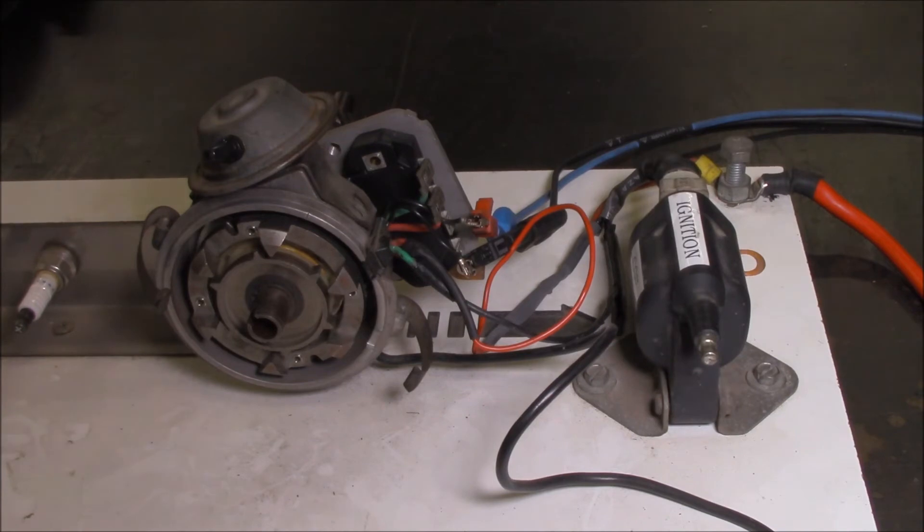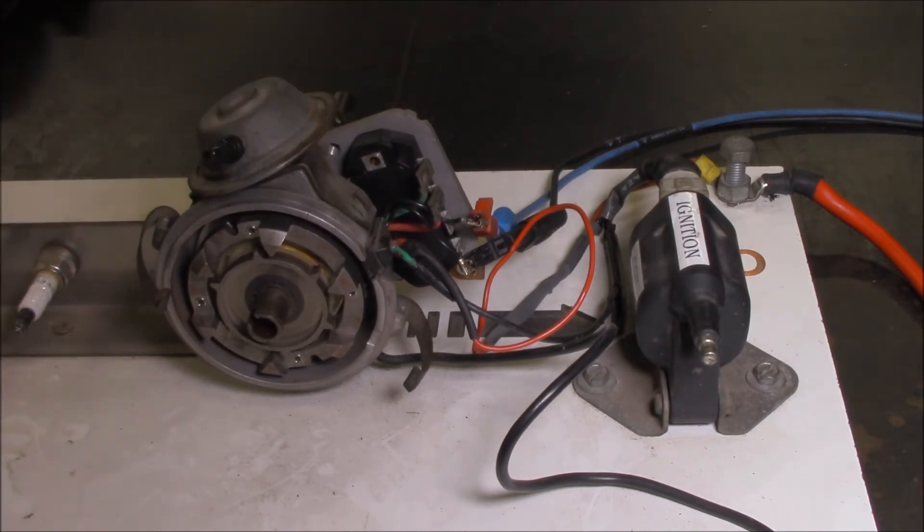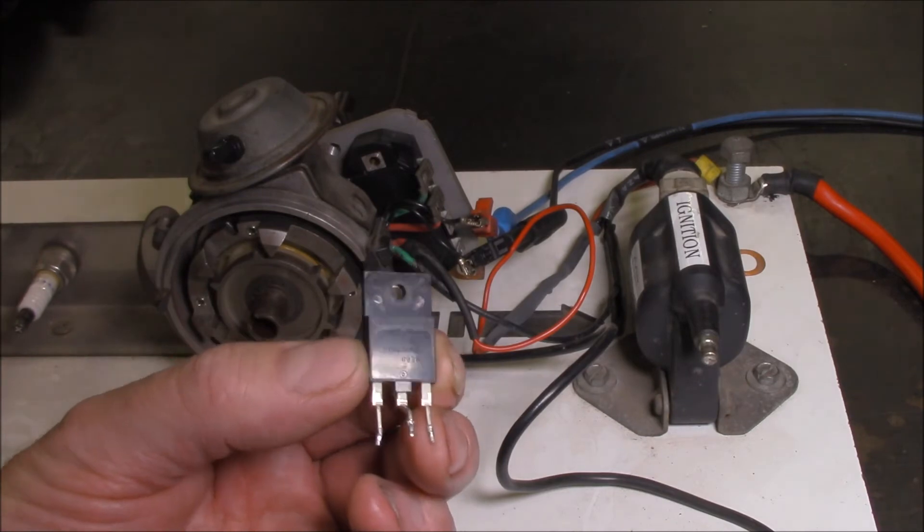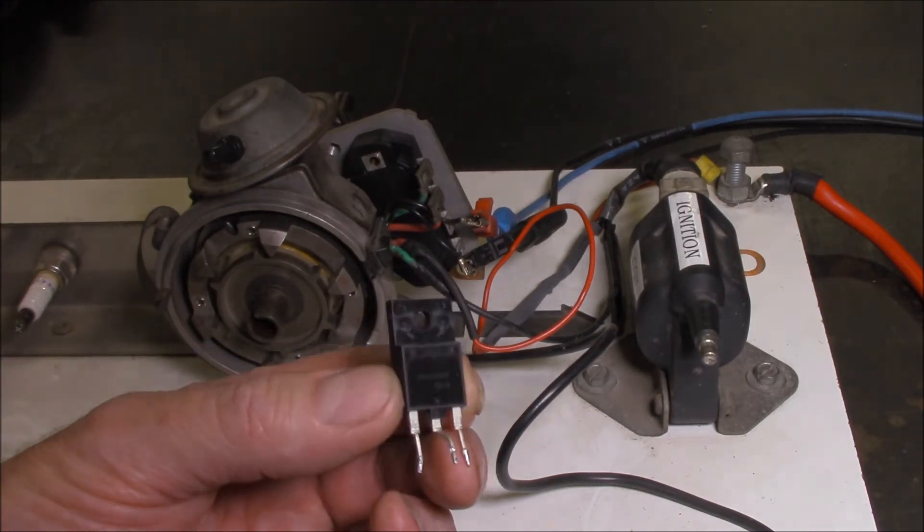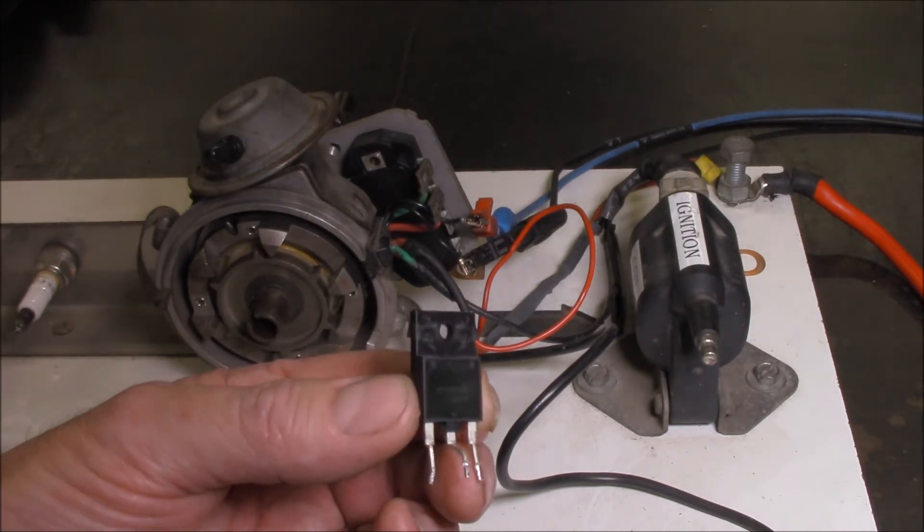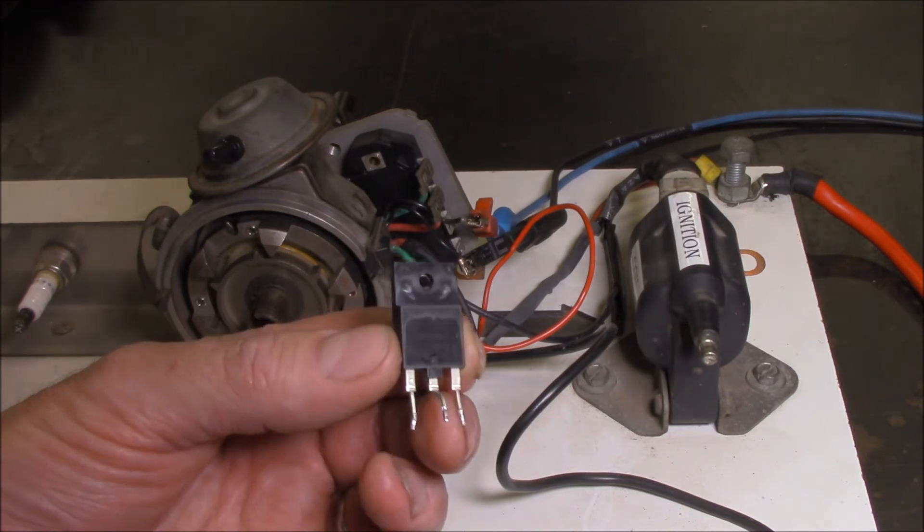So you're probably thinking to yourself, how's that going to help fire my coil at the right time? Well that's where this ignition module comes into play. In fact, deep inside, you'll find a thing called a MOSFET. Something similar to this. MOSFET? What's that stand for? Metal Oxide Semiconductor Field Effect Transistor. No wonder they called it a MOSFET. So what's the goal of this thing and how does it work?